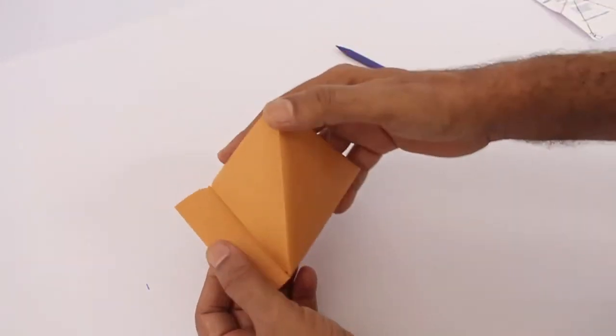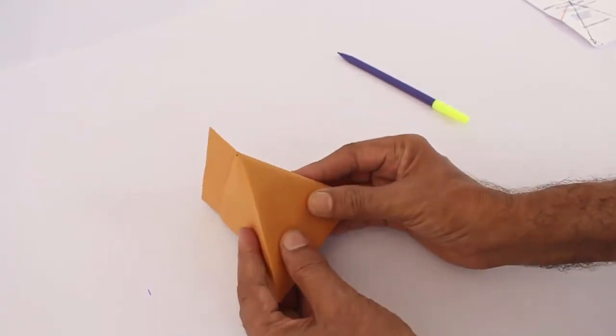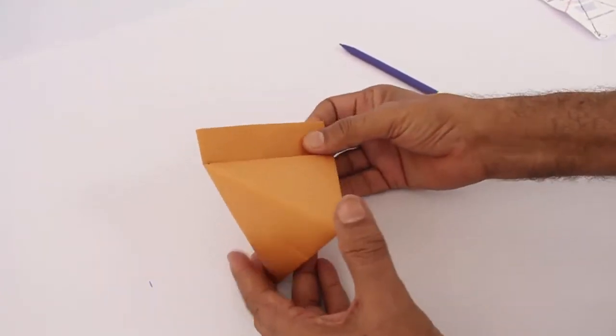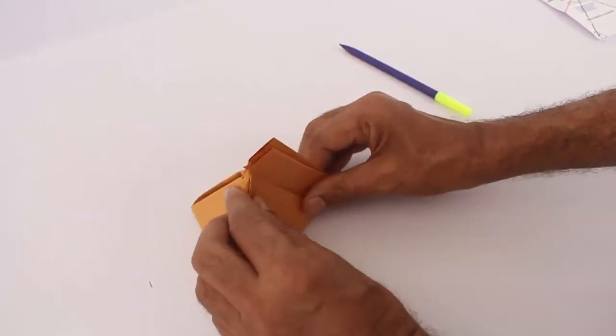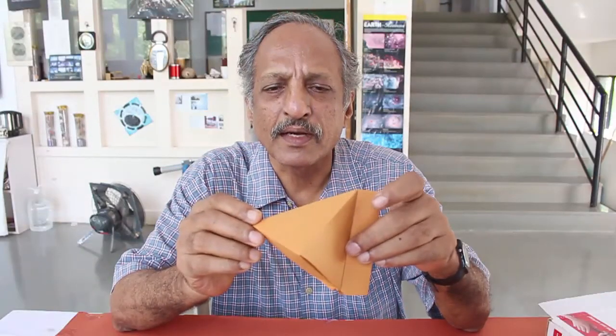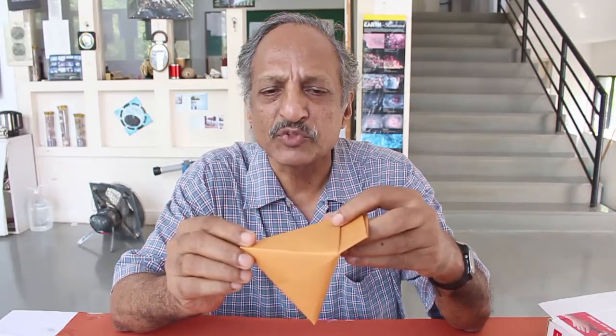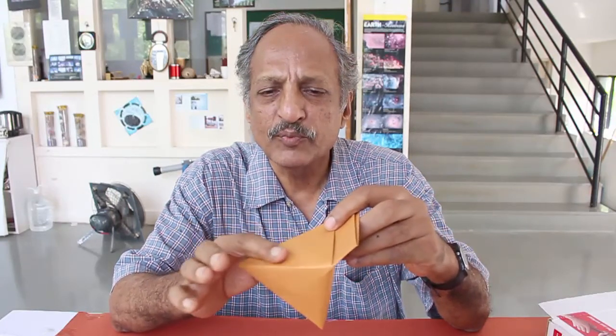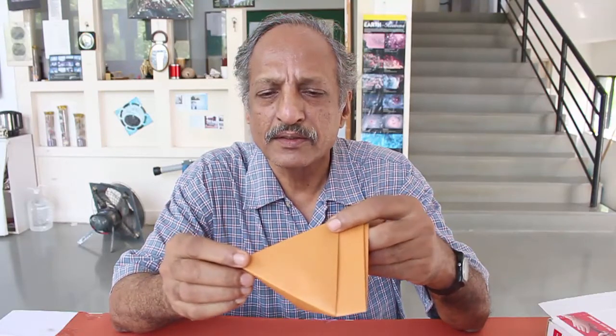And this tetrahedron has got four facets. All facets are equilateral triangles and there is a rectangular strip on one of the edges which makes it look more like the Indian samosa. So essentially what you have made is these four equilateral triangles which consist of the tetrahedron and a small strip to hold.